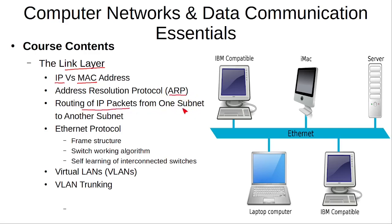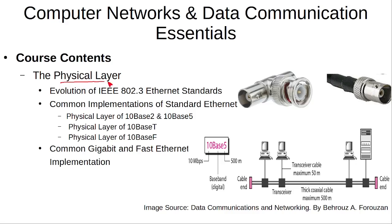We will explain how IP packets are routed from one sub-network to another, and cover the Ethernet protocol used in wired local area networks — including its frame structure and how a switch using this protocol works. We will also explain virtual LANs (VLANs), their motivation, and their use. Then we will discuss the physical layer, examining how the physical layer of the Ethernet standard has evolved over time, the common implementations for standard Ethernet, Fast Ethernet, and Gigabit Ethernet, the physical media used, and the connectors used in these implementations.